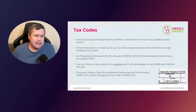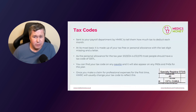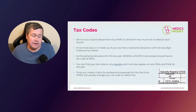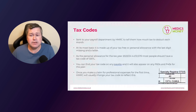At its most basic, the tax code is made up of your tax-free personal allowance with the last digit removed, and then a letter is attached to the end — usually the letter L, which just means you're a standard UK taxpayer. If you live in Scotland, you should see an S at the start of the tax code, and if you live in Wales, you should see a C at the start to denote that you're a Welsh taxpayer.